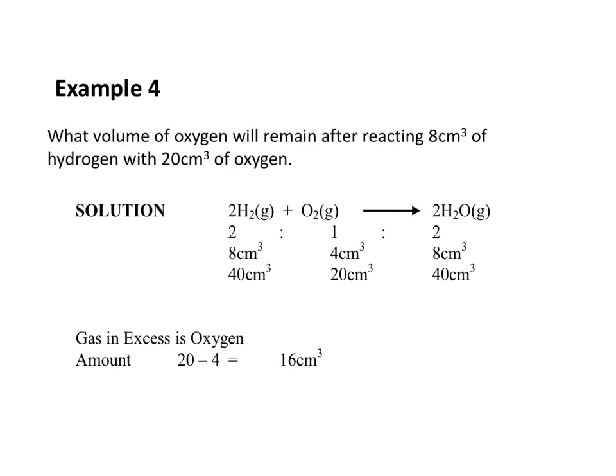Example 4. What is the volume of oxygen that will remain after reacting 8 cm³ of hydrogen with 20 cm³ of oxygen? The first step is to write and balance the chemical equation of the reaction: 2H2 + O2 → 2H2O, meaning 2 moles of hydrogen reacts with 1 mole of oxygen to give 2 moles of water. So 8 cm³ of hydrogen requires 4 cm³ of oxygen to give 8 cm³ of water.